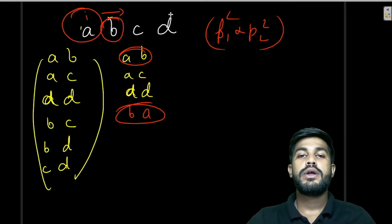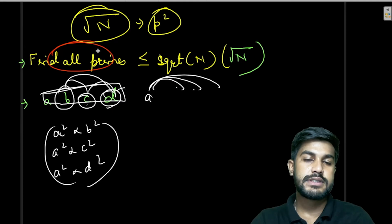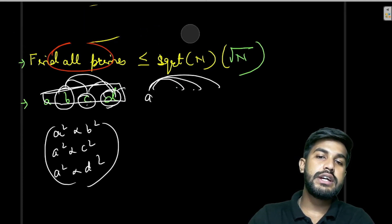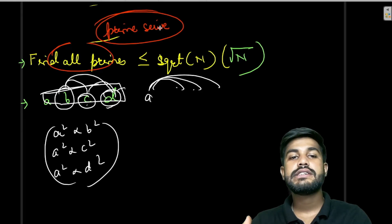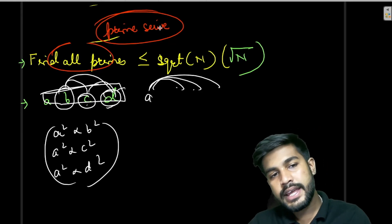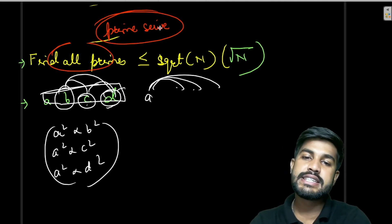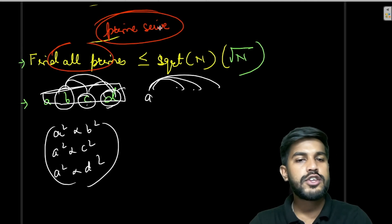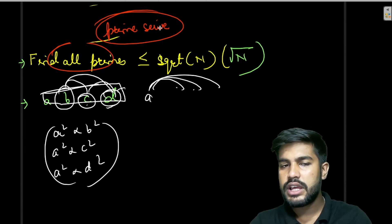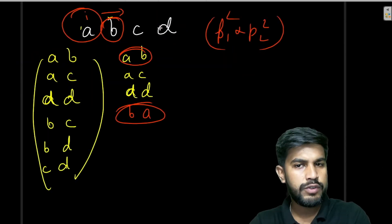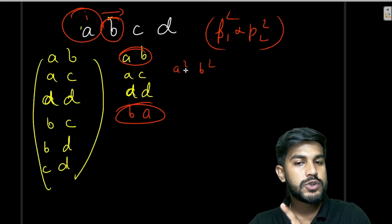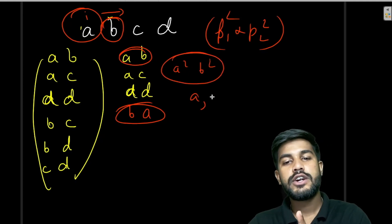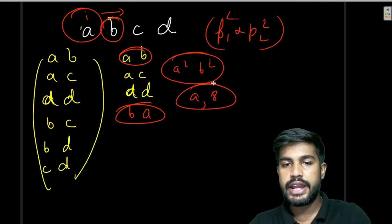To find all primes we use the Sieve of Eratosthenes — this is a prerequisite. Please go learn the Sieve first and then come back to this video. We collect all primes up to the limit, then check both conditions: p1²×p2² ≤ n, and p⁸ ≤ n.